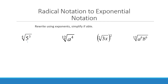Now let's go the opposite direction — if you're given a radical, can you rewrite it using exponents? For example, the fourth root of 5 cubed means 5 to the 3/4 power. Your denominator is your index, and your exponent is your numerator. Something like a to the 4/12 power — could this be simplified? Yes, because 4/12 is the same as 1/3.